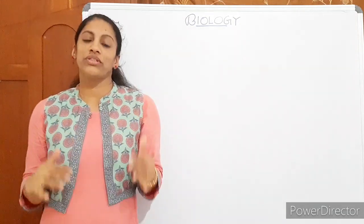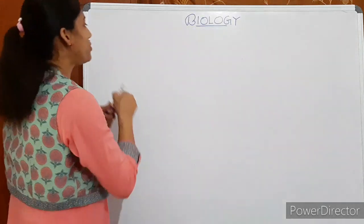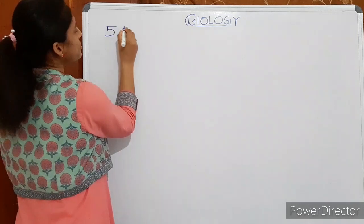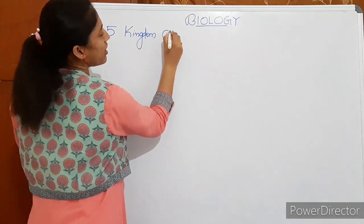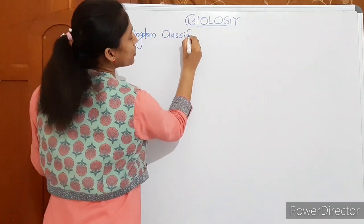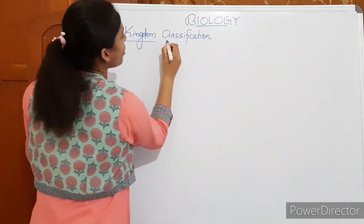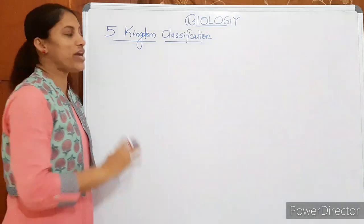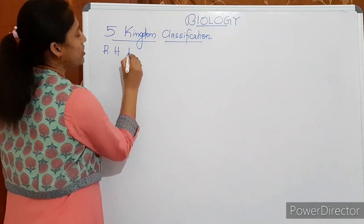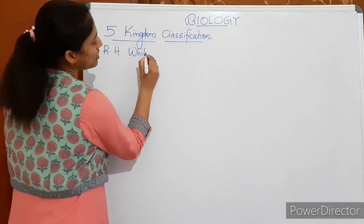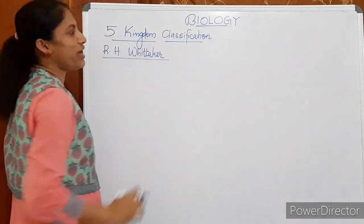And you also know the five kingdom classification introduced by R.H. Whittaker. So who introduced the five kingdom classification? It is by R.H. Whittaker, Robert Whittaker.